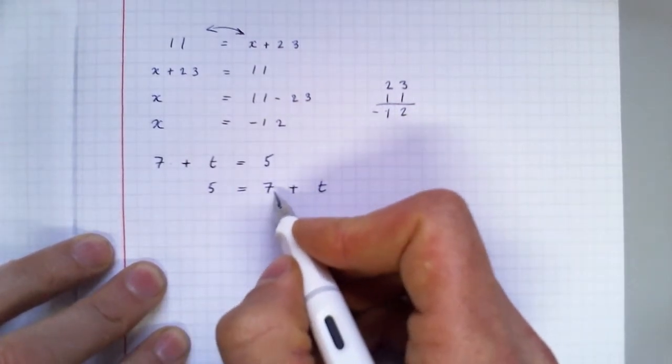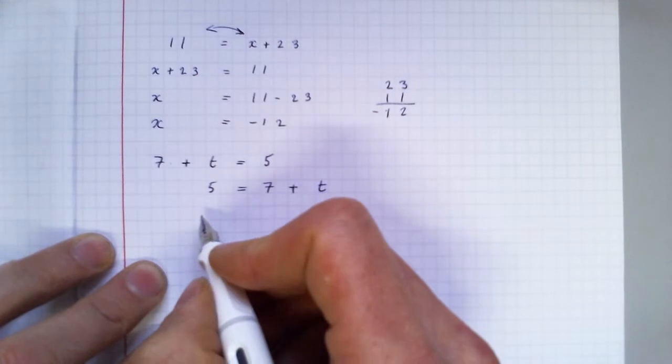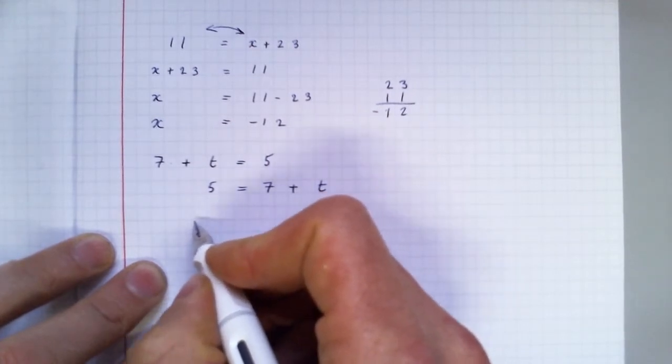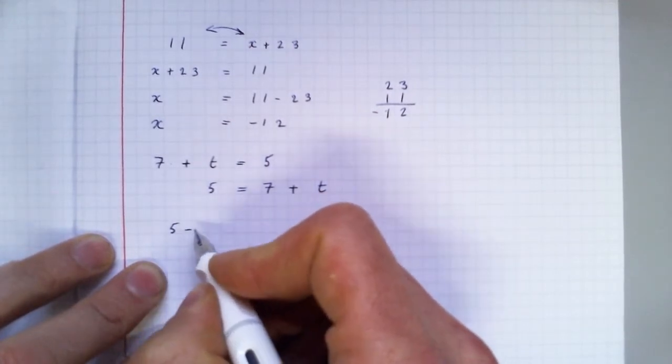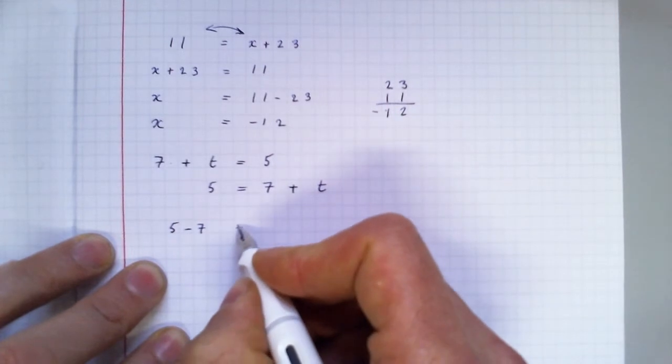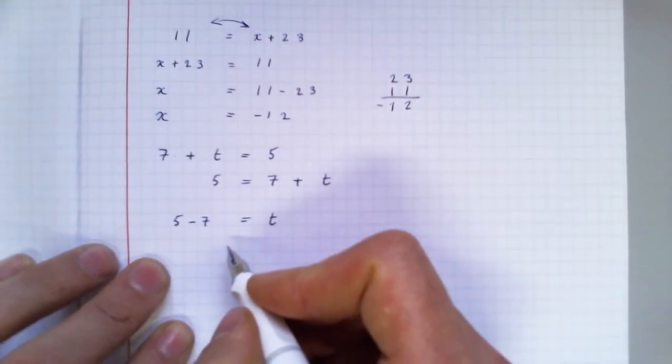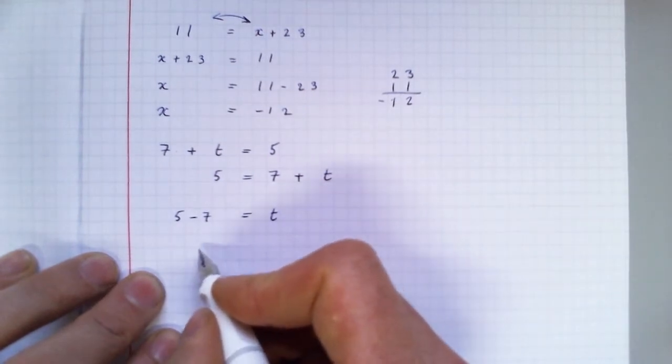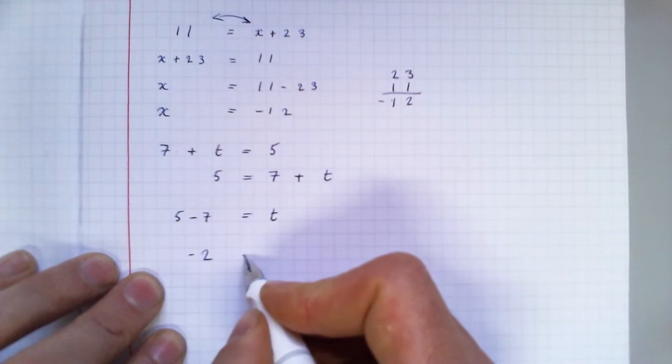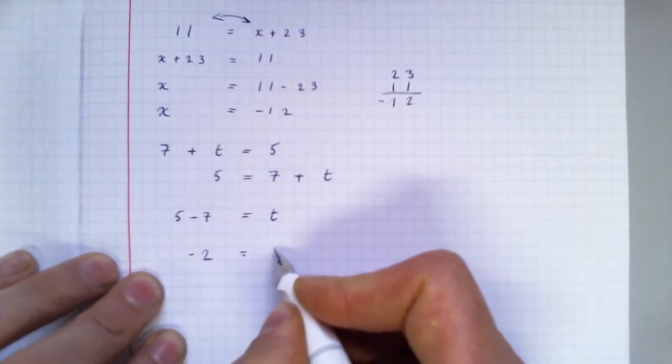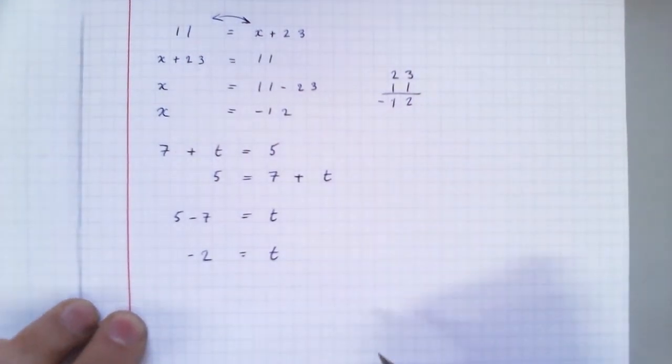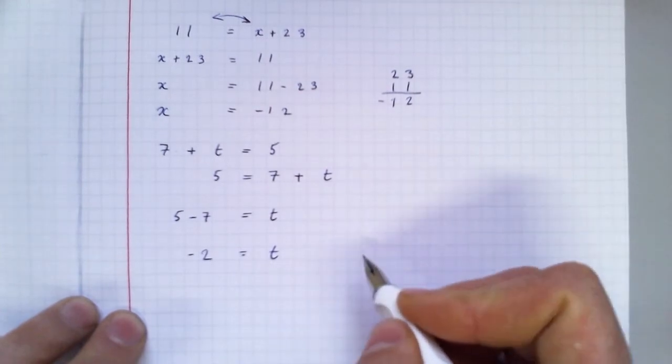OK, I've got plus 7 here. I want to get rid of plus 7. So that's 5, take away 7 equals t. And that would mean that 5 take away 7 is minus 2 equals t. It's the other way around, isn't it? t equals minus 2.